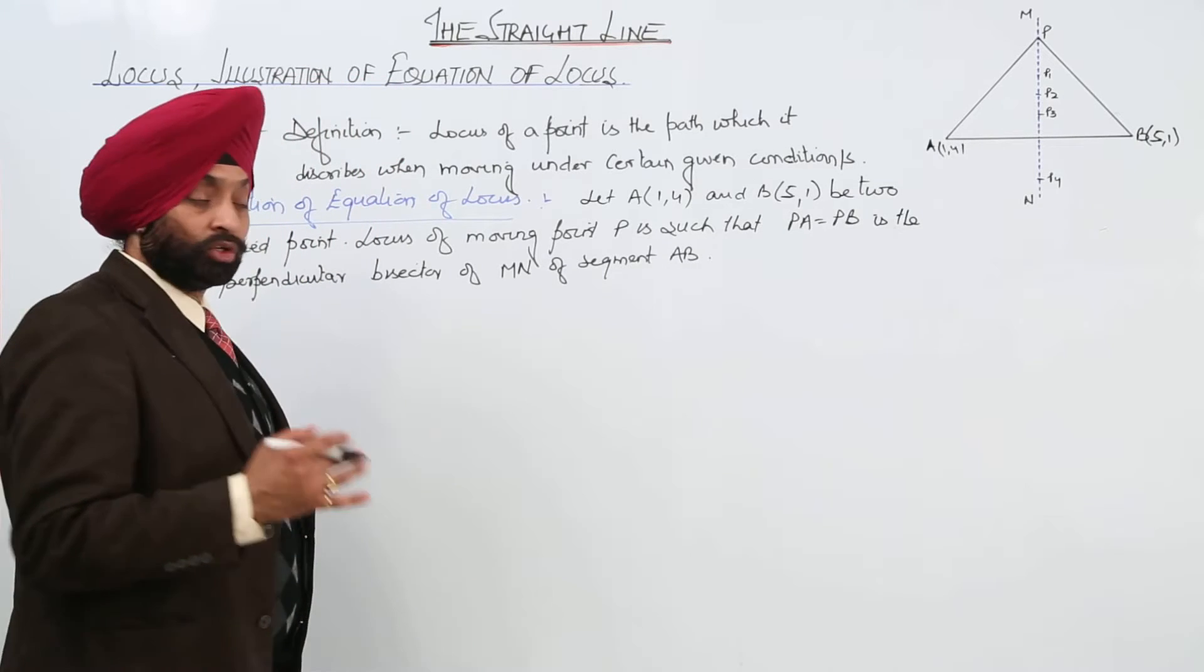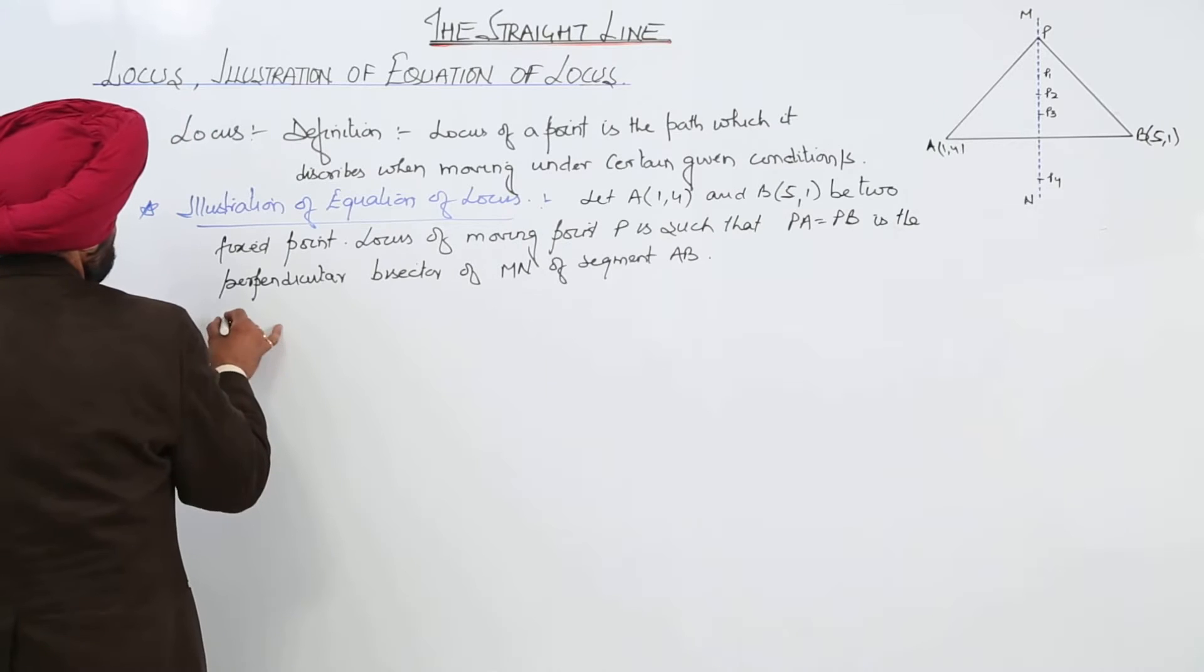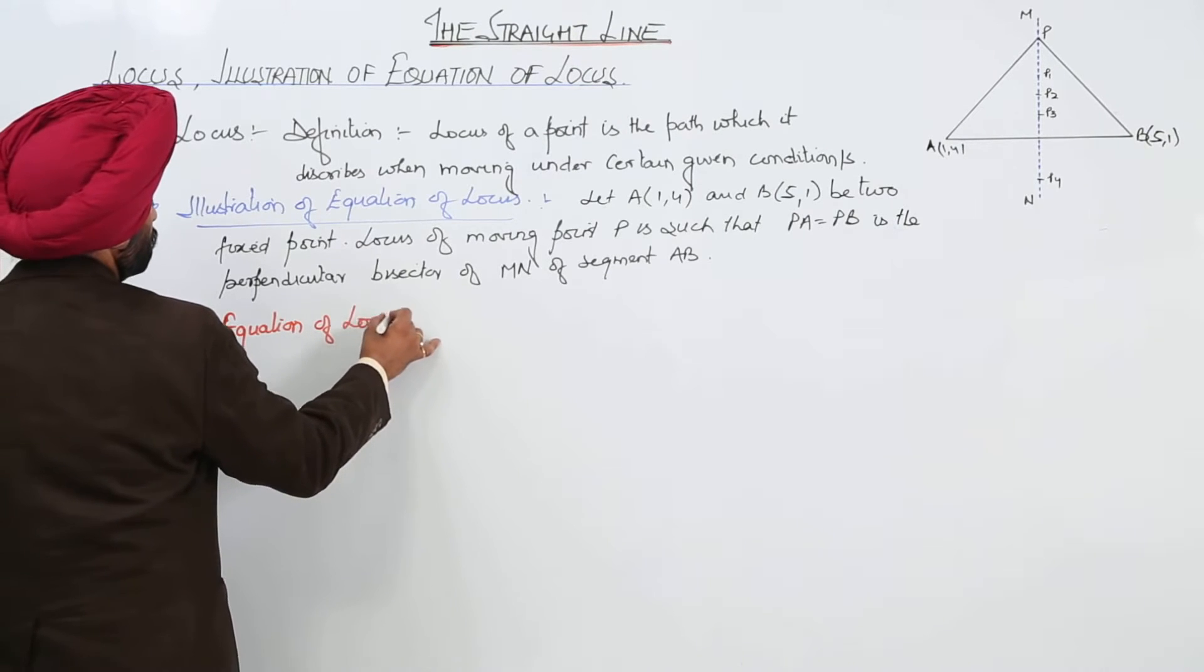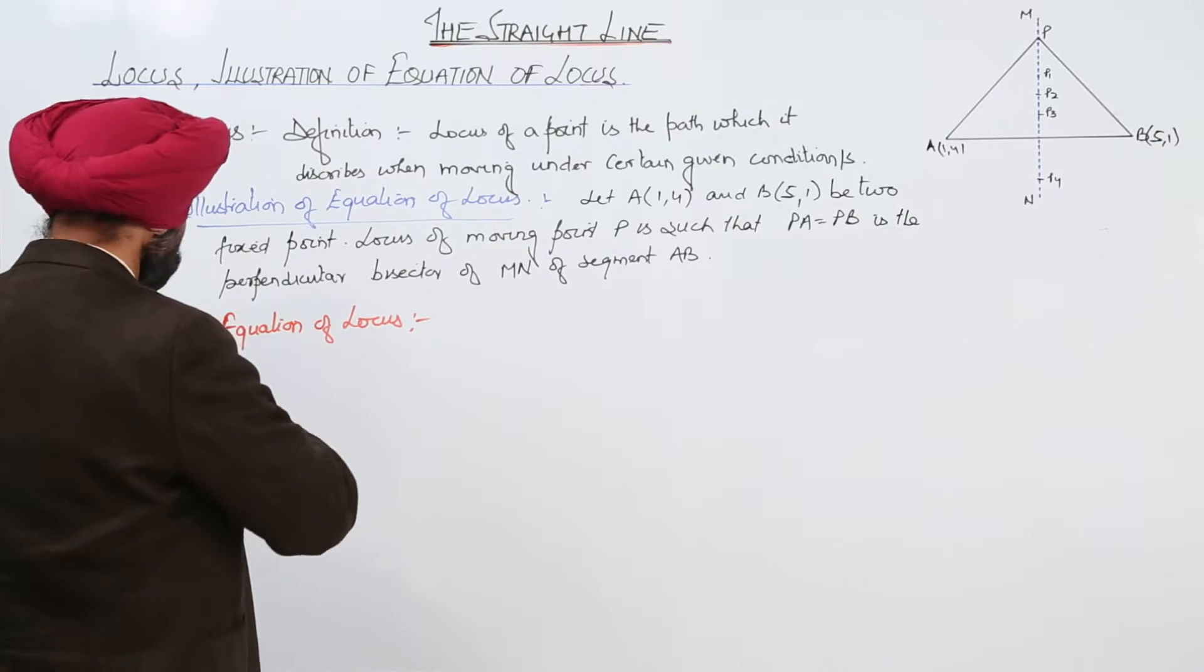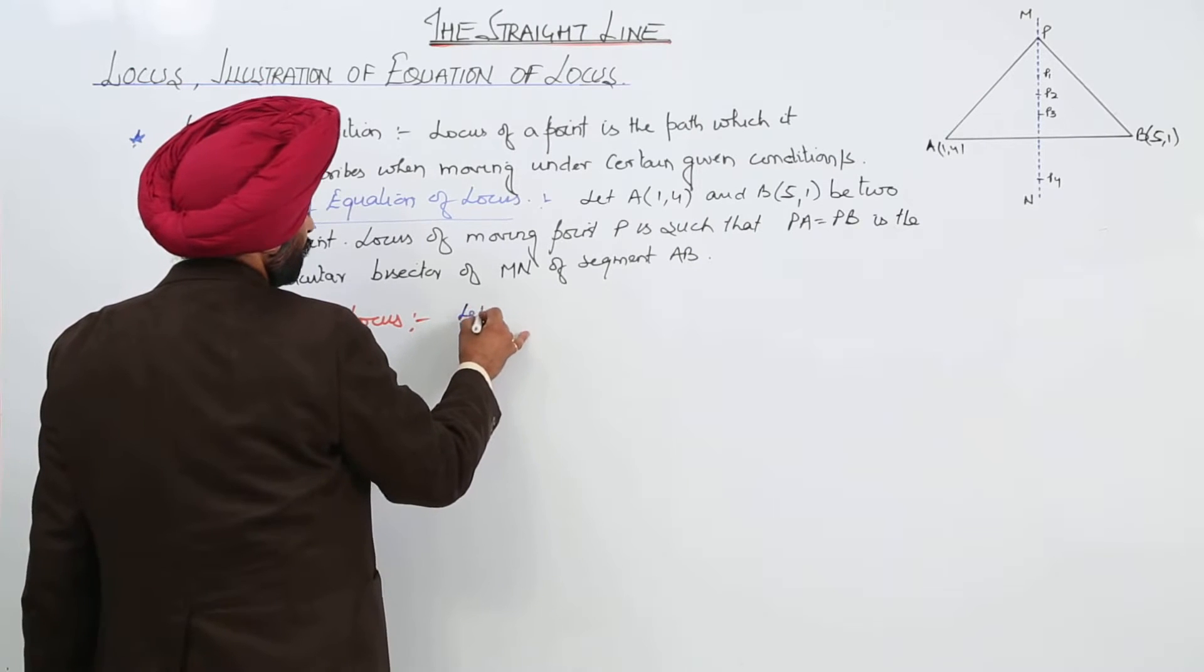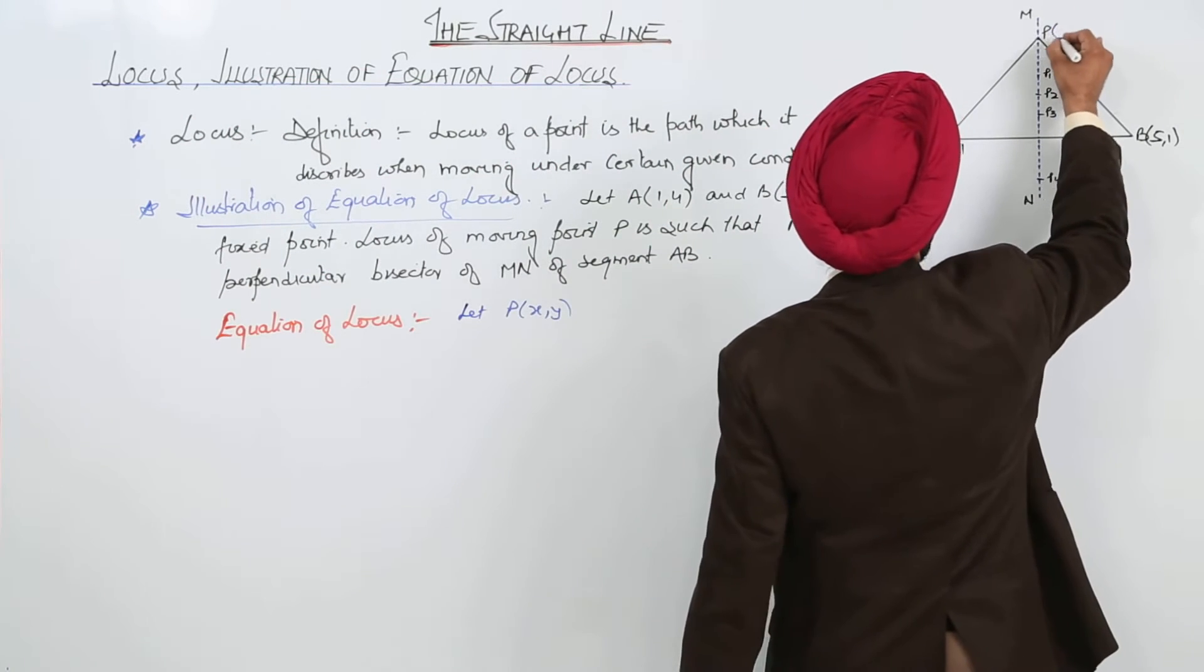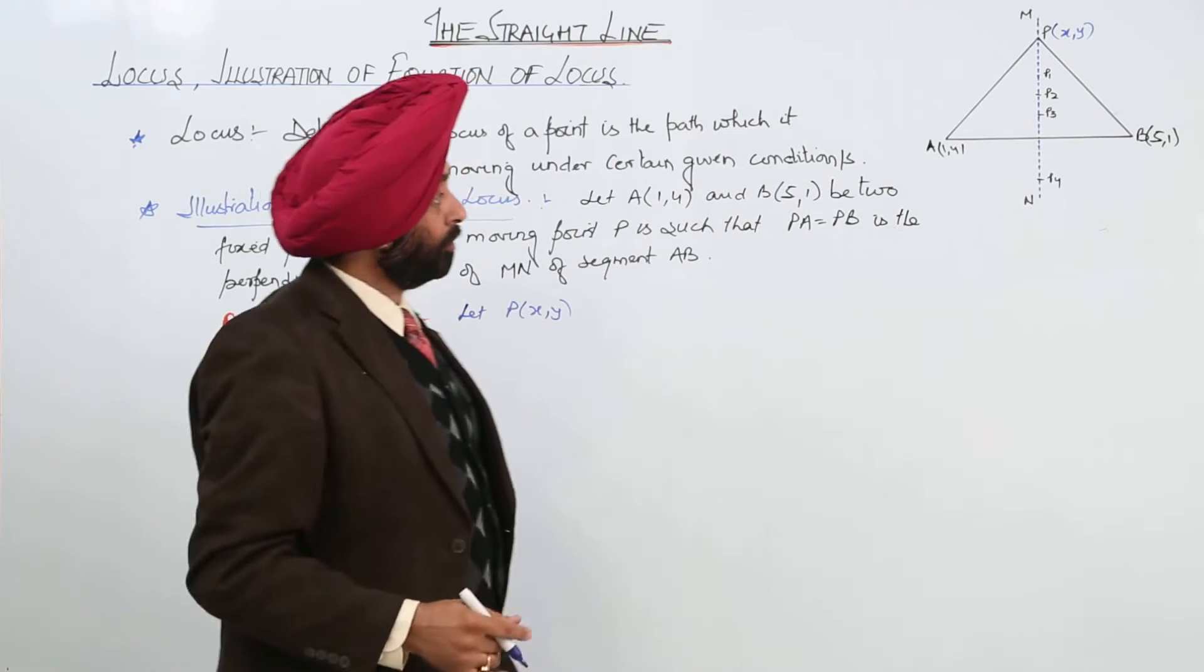Now, let us find the equation of the locus. Now, equation of locus according to the given figure there. Let capital P (X, Y), now I am just taking only P. And what is P? P is here. So, let this point be, coordinates of this point be X, Y.